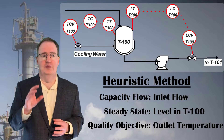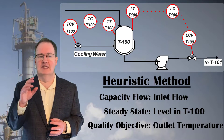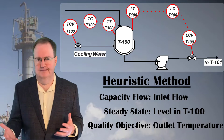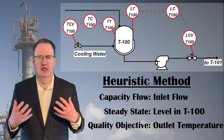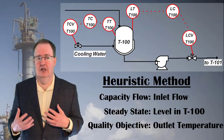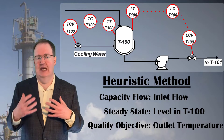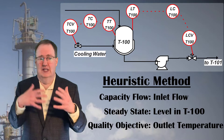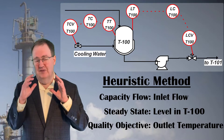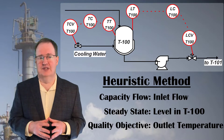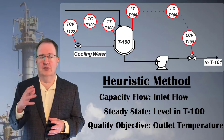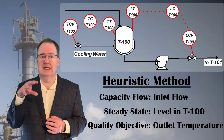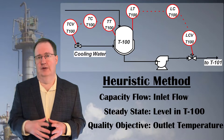The advantage of the formal method is that it relies on thermodynamic first principles of degrees of freedom. The disadvantage is that a full mass and heat balance for many standard unit operations — like a reactor, an absorber, or a distillation column — can be very complex, even though only a few degrees of freedom are present. The heuristic method guides you to a solution faster.